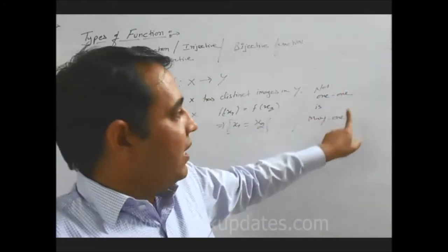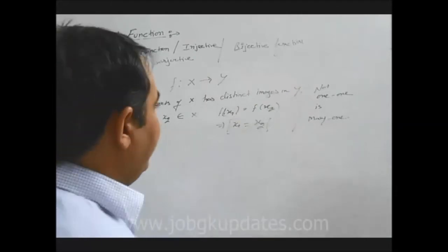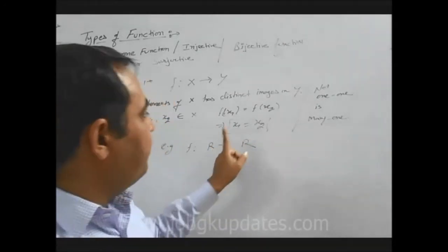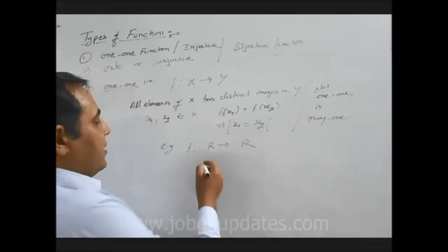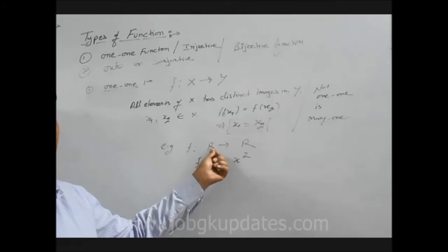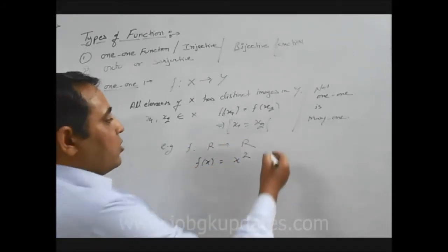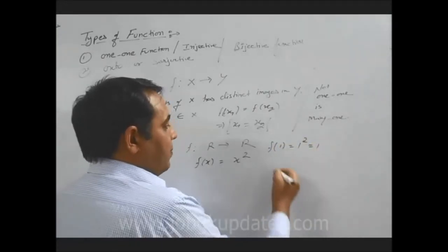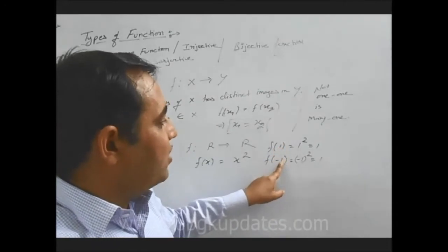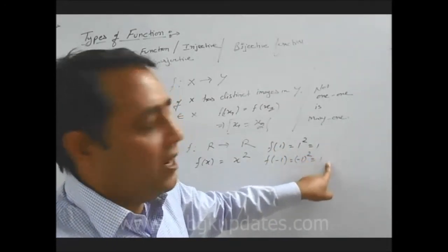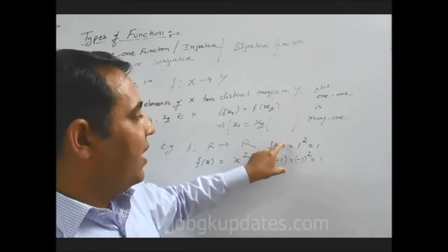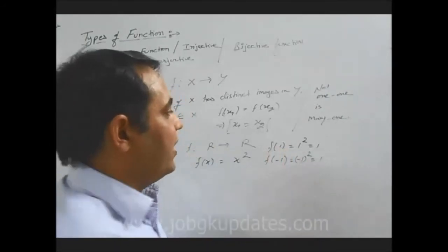Let us take an example: a function is defined from real numbers to real numbers, and f(x) = x². We can clearly see that in real numbers we have positive and negative numbers. If we put f(1), we get 1² = 1. And if we put f(−1), we get (−1)² = 1. So both 1 and −1 have the same image 1 — they are not having distinct images. Therefore, this function is not a one-one function.